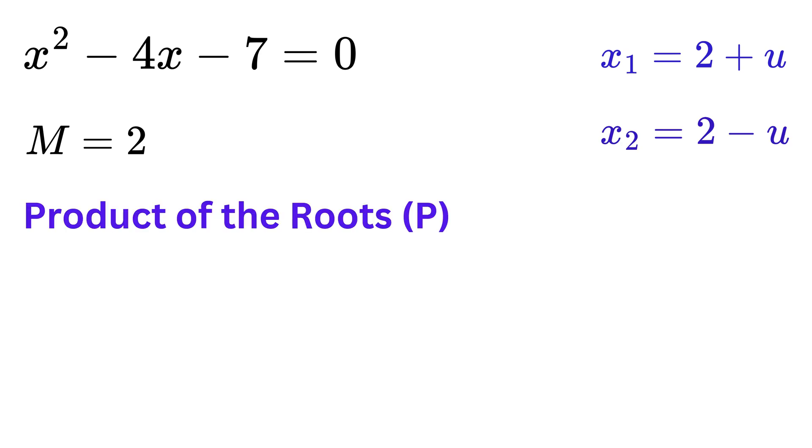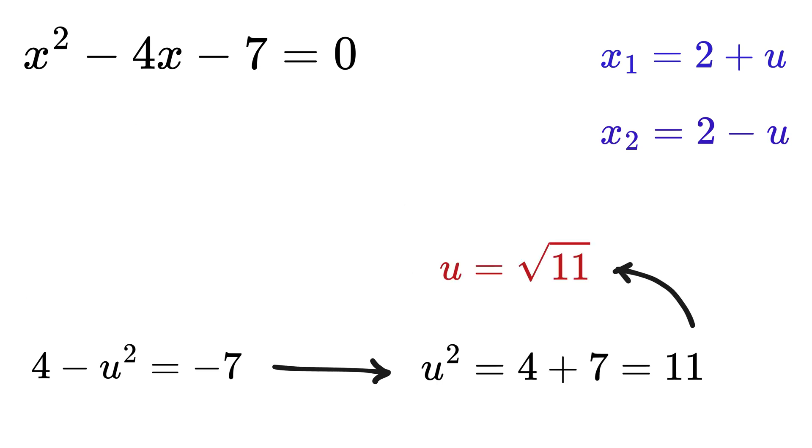and the product of the roots equals minus 7. Therefore, 4 minus U square equals minus 7, or U square equals 4 plus 7, or 11, which gives U equals root 11. Hence, the roots of this equation are 2 minus root 11 and 2 plus root 11.